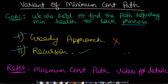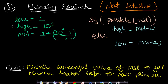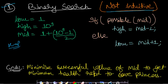I'll put a link in the description if you have doubts about minimum cost path. The first method to solve this problem is using binary search, which is not very intuitive. The idea is: we want to find the minimum health by which we can traverse the path from the knight to the princess. We want to minimize the successful value of mid to get the minimum health required.